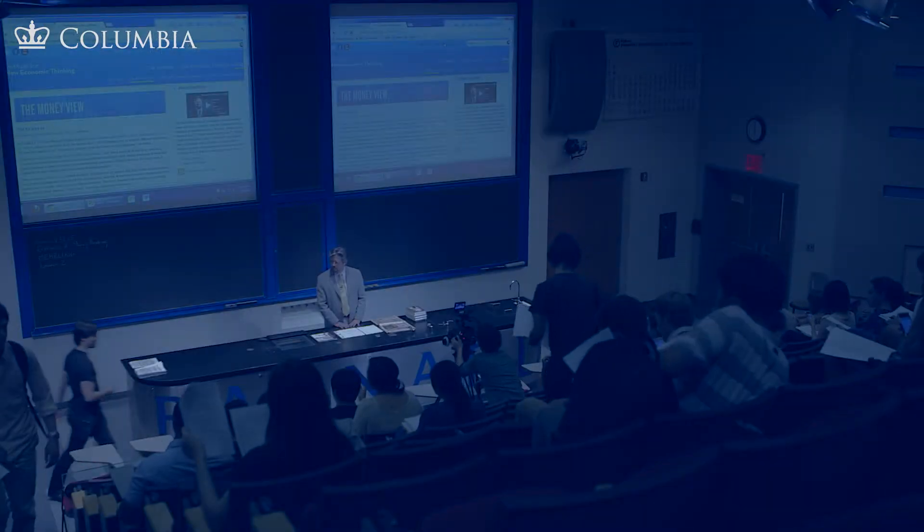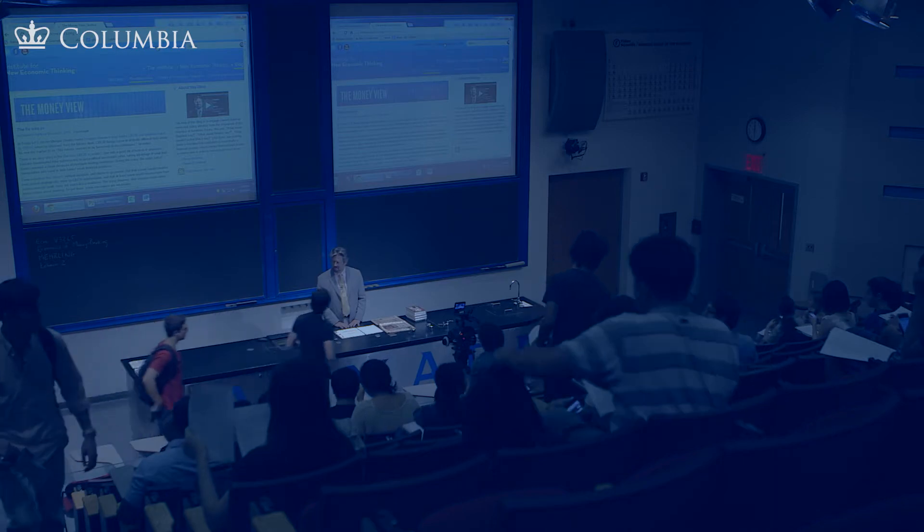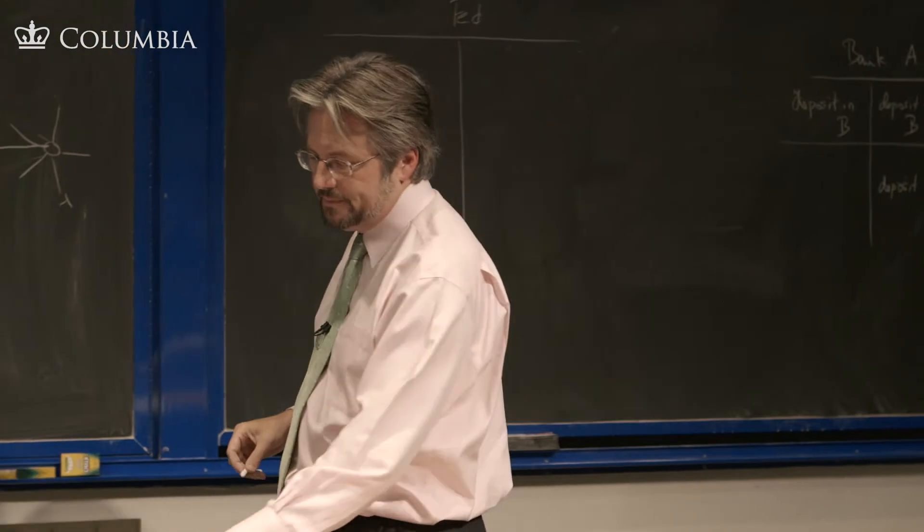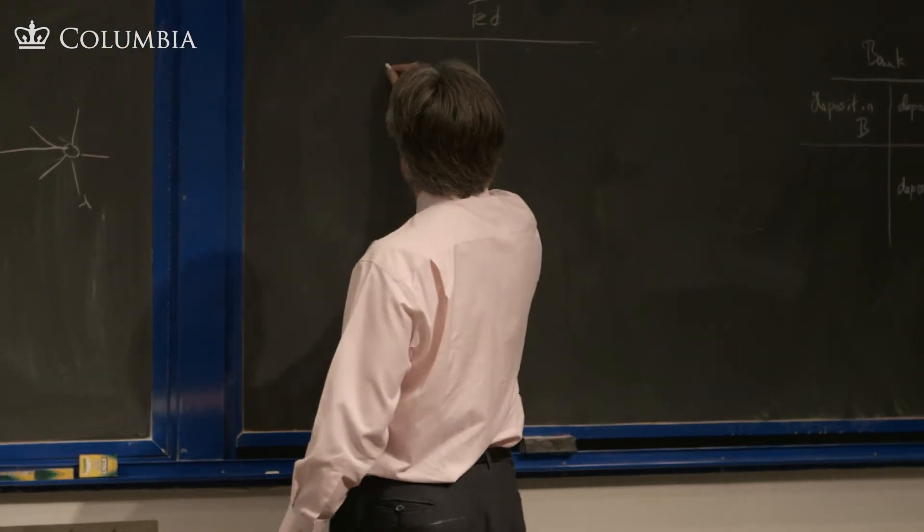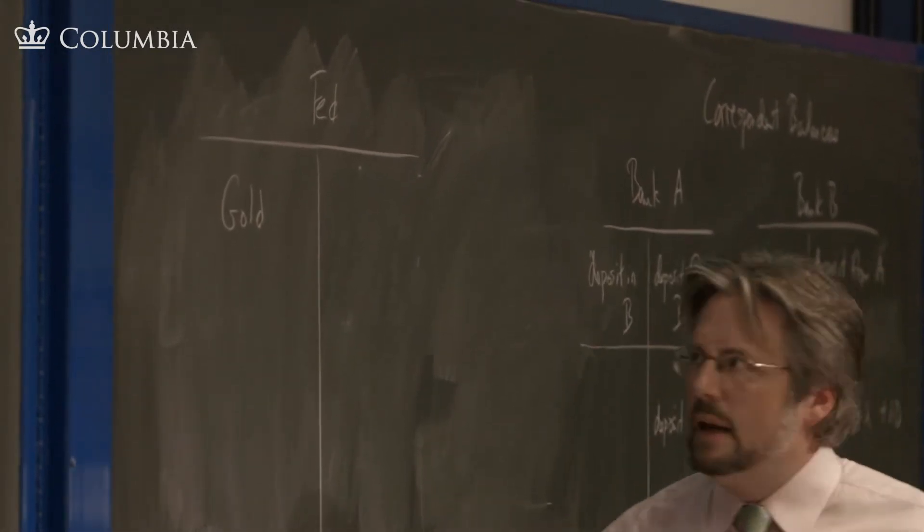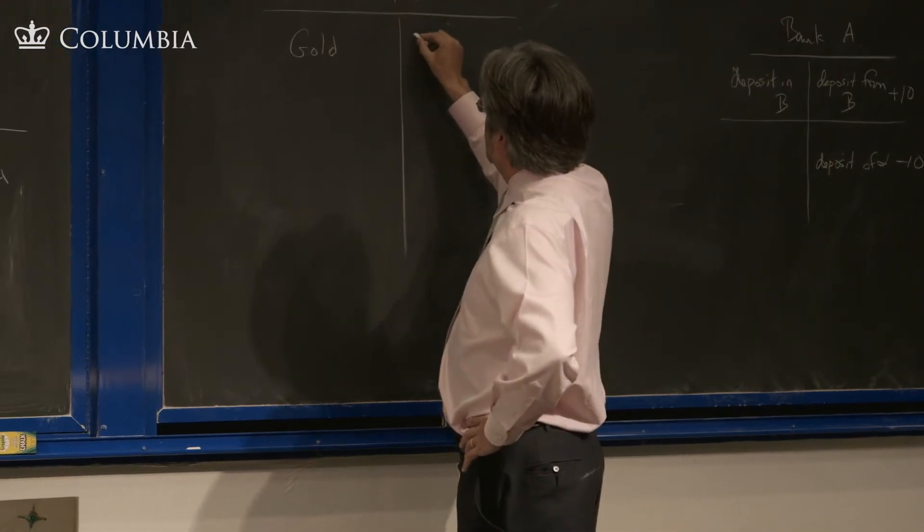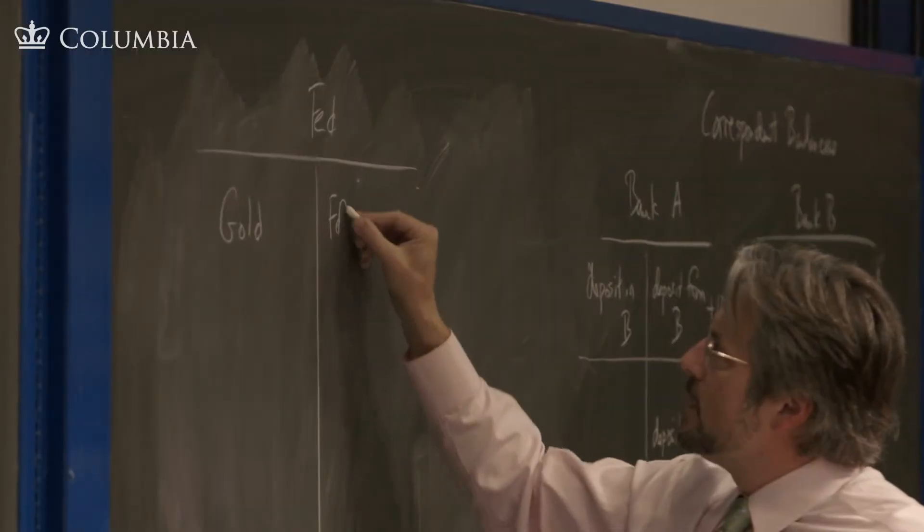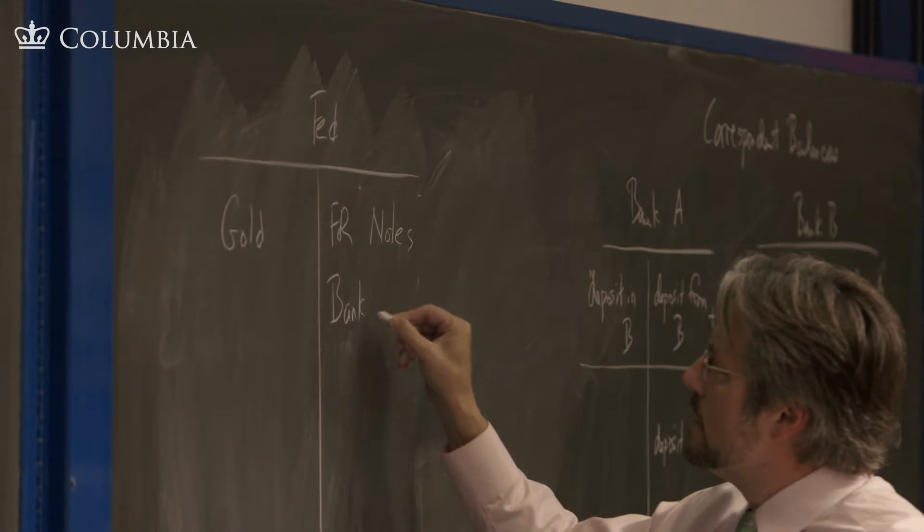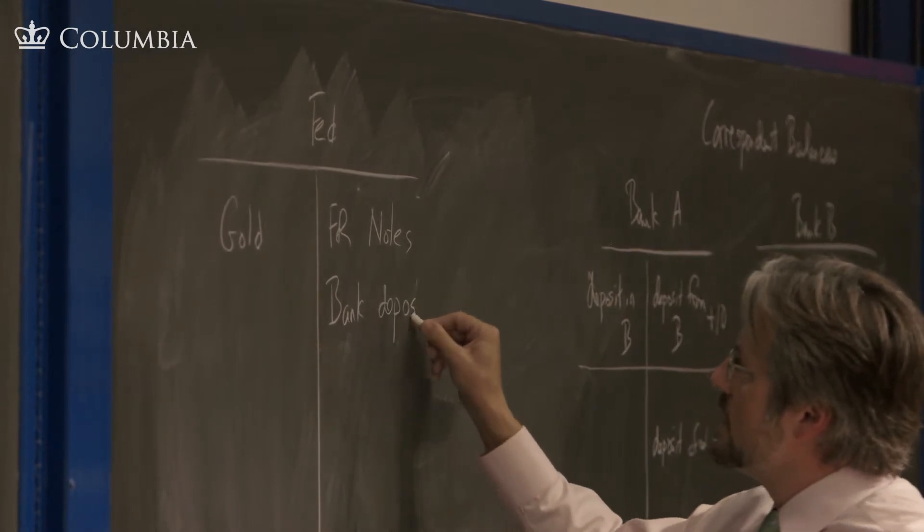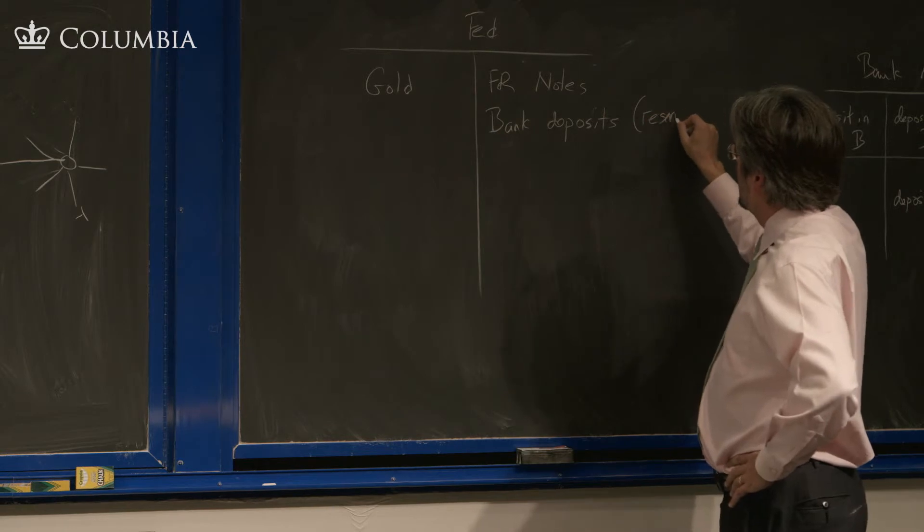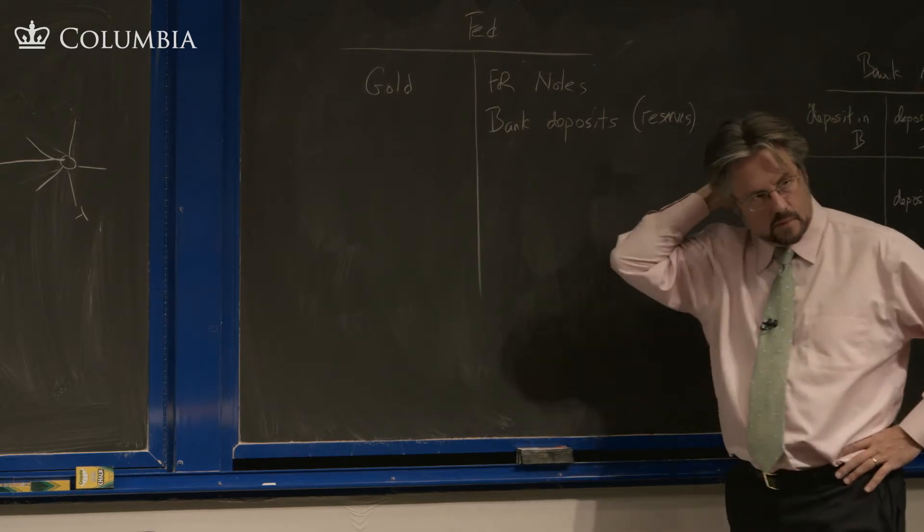The Federal Reserve System was on the gold standard then, so there's gold here. And there are Federal Reserve notes as a liability, and there's also Bank Reserves here, which are reserves.